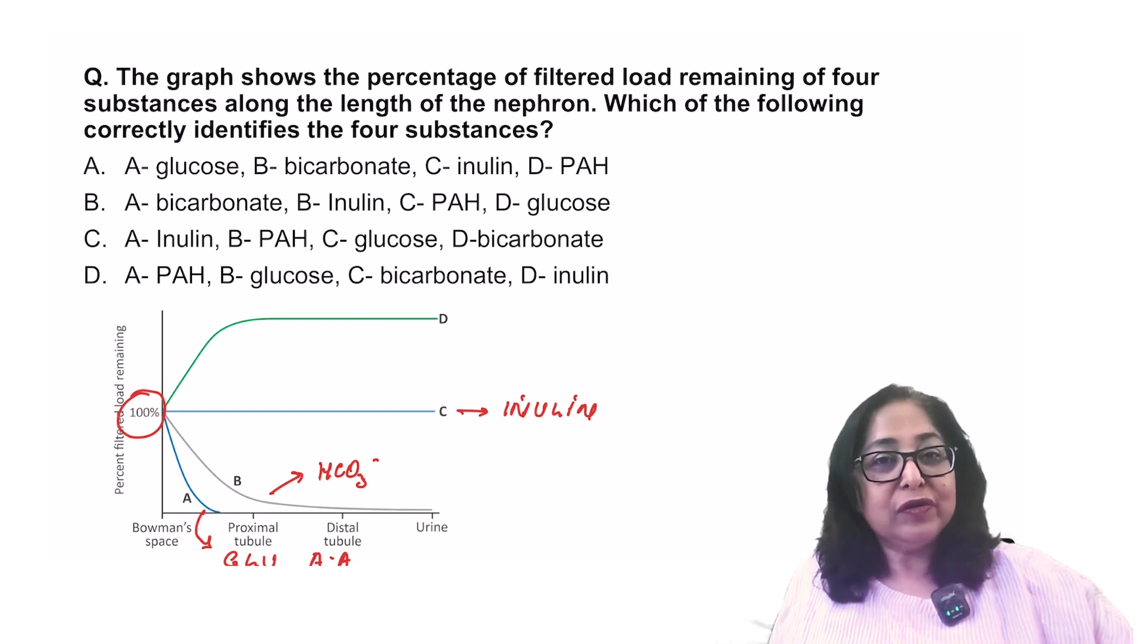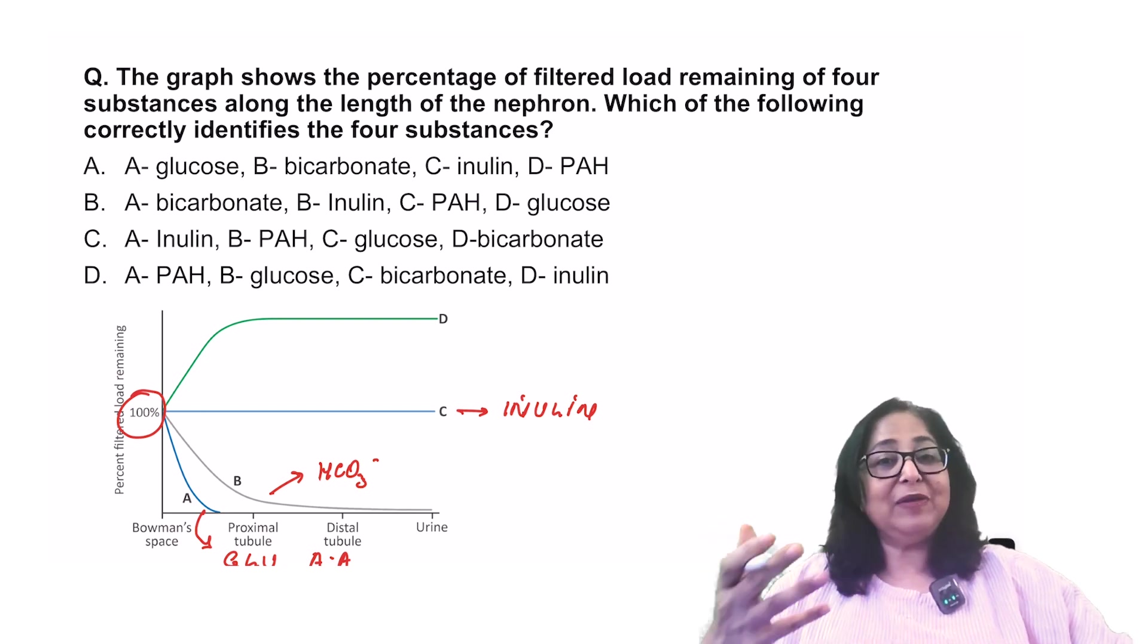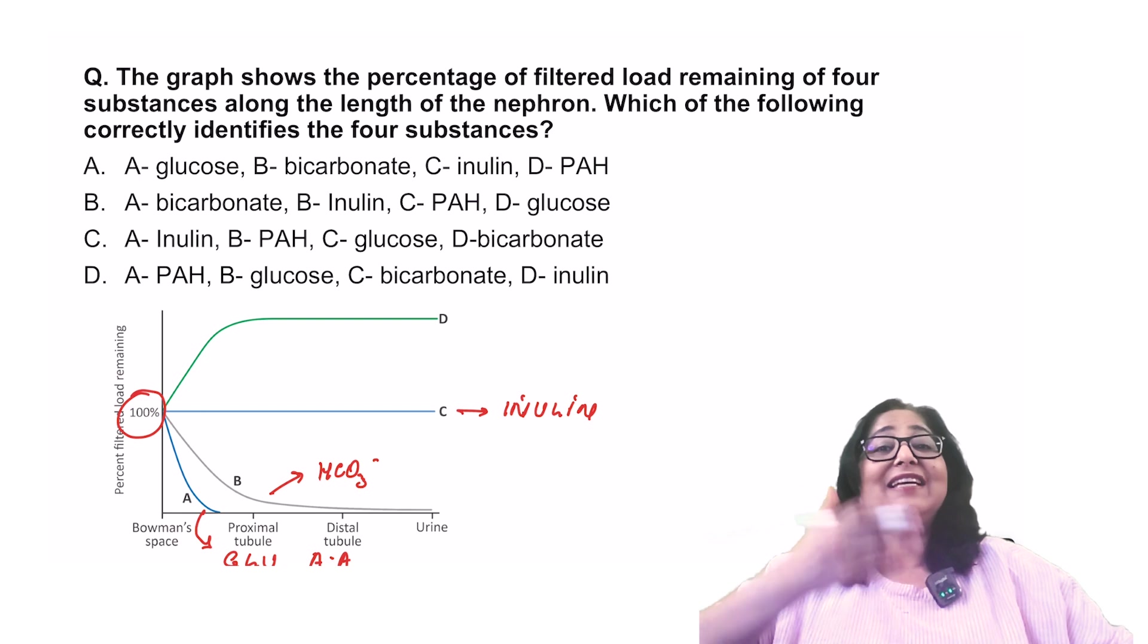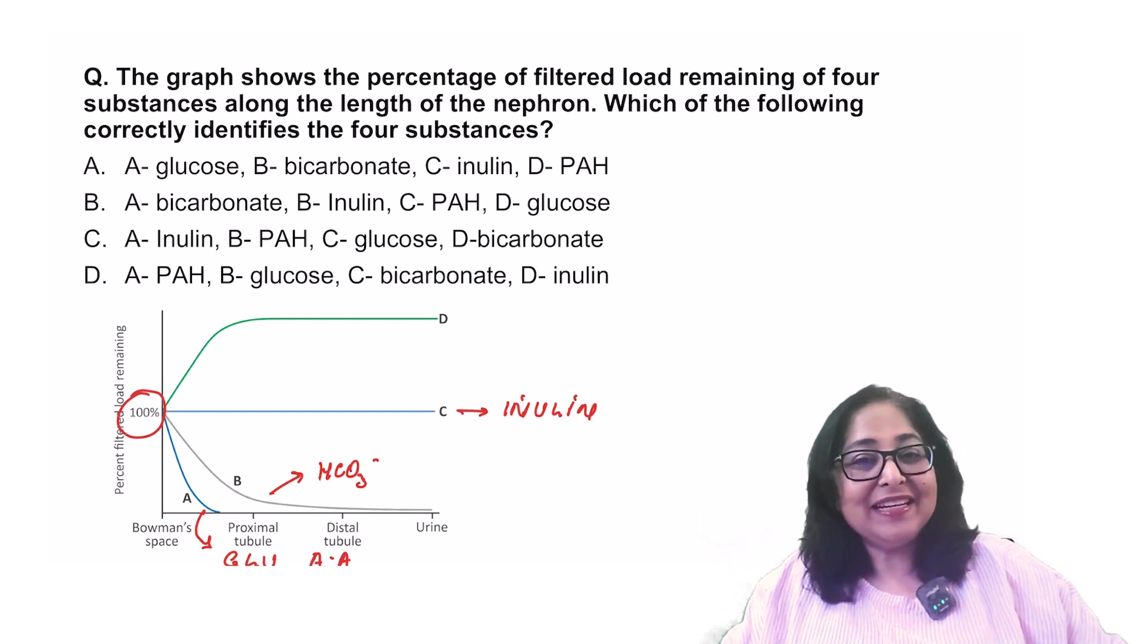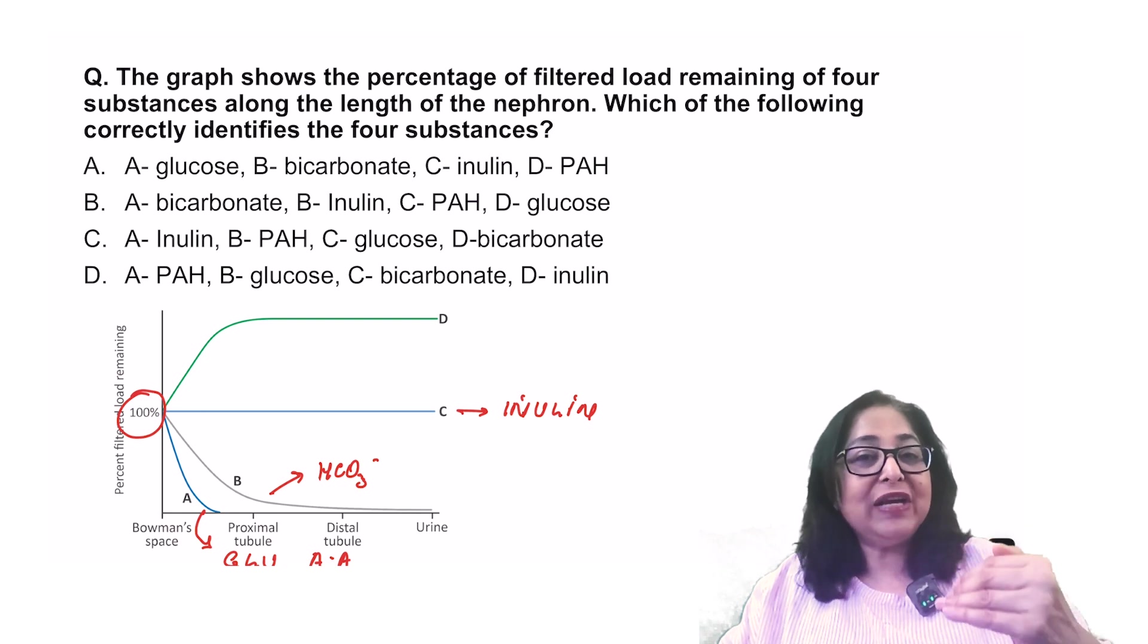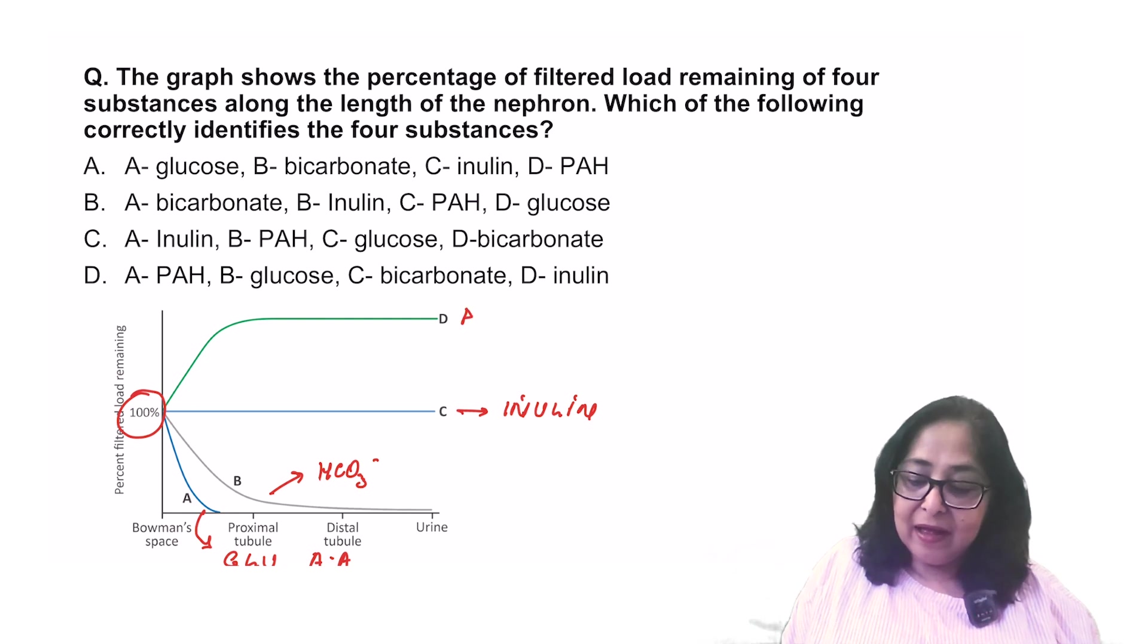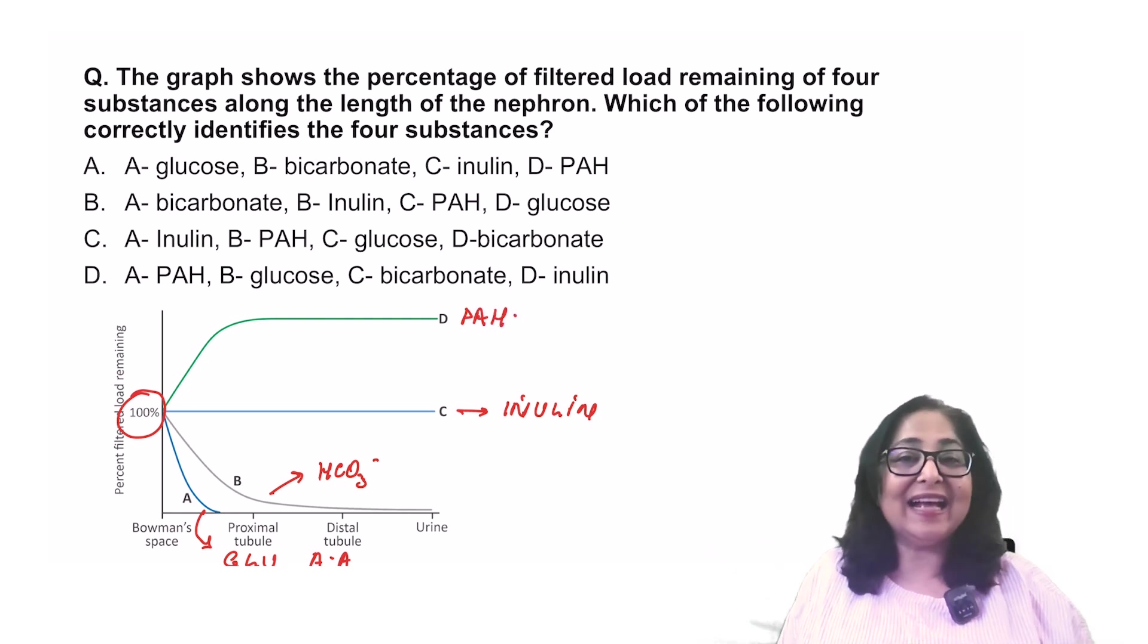Look at substance D. 100% of the glomerular filtrate. Now, as it moves through the nephron, especially by the end of PCT, the percentage of the substance has increased. How can that increase? By secretion. So a substance which is freely filtered and secreted in the PCT itself is paraaminohipuric acid.